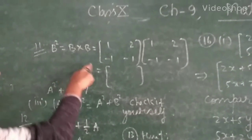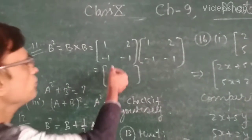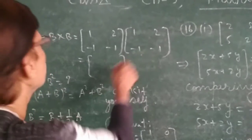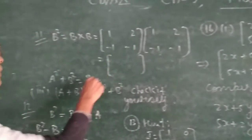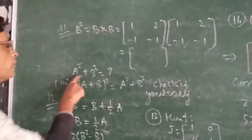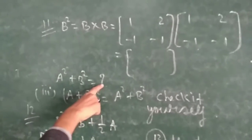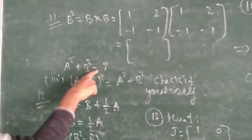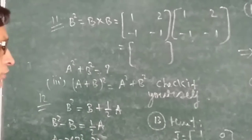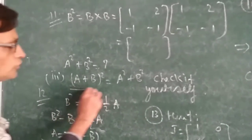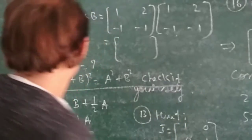b squared equals b into b. Now put the value of b like this and the same here. Then you have to multiply. And after doing this, you have to add that. Then check your answer here and there in the earlier part. If the answer is not the same, you have to check this expression by yourself.